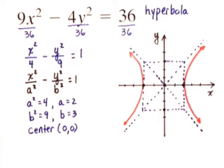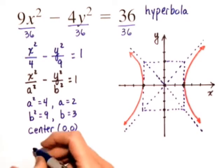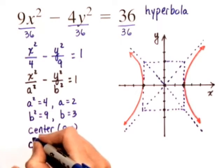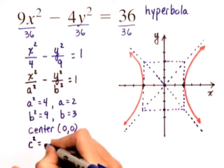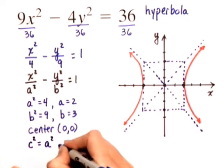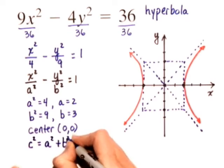So, we're asked for a little bit more information. Although we don't need the foci to graph the equation, we can still come up with the points where the foci are located. In a hyperbola, we know that we have the relationship that c squared is equal to a squared plus b squared.